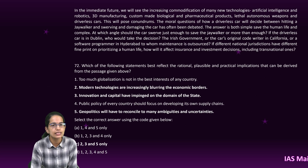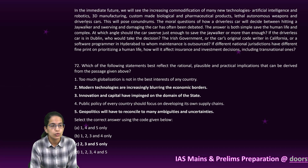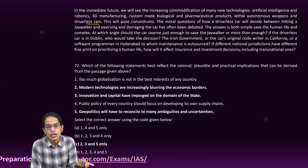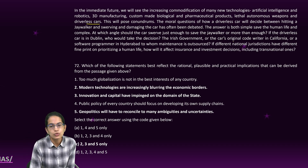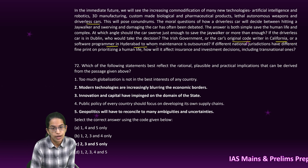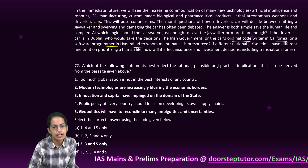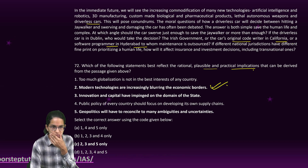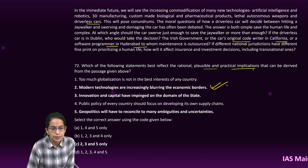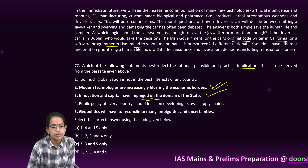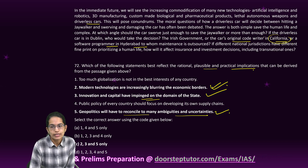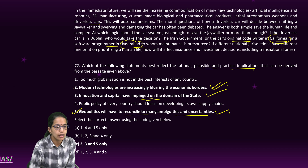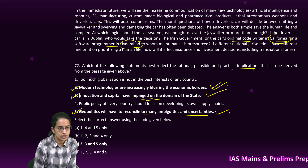The next passage: we are producing more and more and moving toward driverless cars. If a driverless car hits a jaywalker, who is responsible — the car's original code writer in California or the software programmer in Hyderabad? Modern technologies are blurring economic borders; innovation and capital have impinged on the domain of the state; and geopolitics will have to reconcile the ambiguities and uncertainties. So statements one, two, three, and five are the right options. 'Too much globalization is not good' and 'public policy should focus on supply chains' are not related.